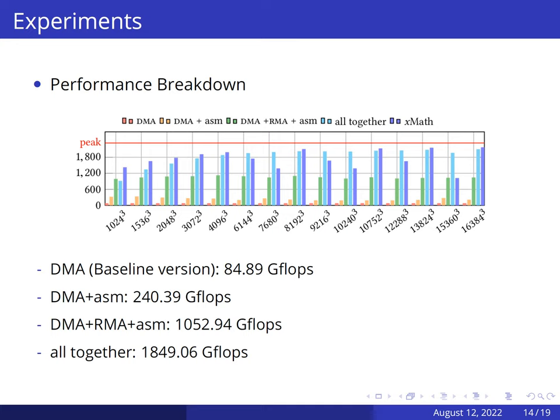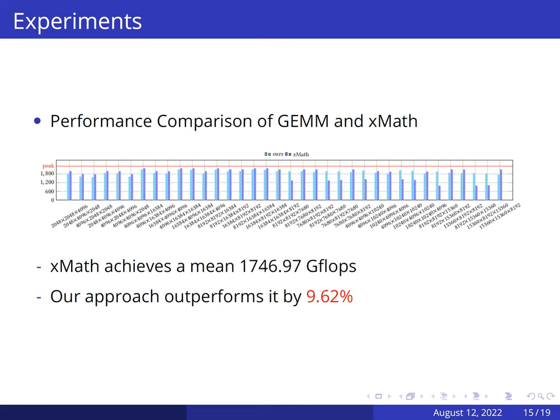The second version orange bars shows the results using the inline assembly microkernel. We can obtain a mean speedup of 2.83 with the average performance increasing to about 240 GFLOPs. The third code variant is represented using green bars with the RMA broadcast enabled. It raises the mean number up to about 1050 GFLOPs. Finally, we show the overall performance of our approach that turns on all optimizations. We get an average performance of 1,849.06 GFLOPs. We also collect the GFLOPs numbers of XMAS. Our approach outperforms it by 9.62%.